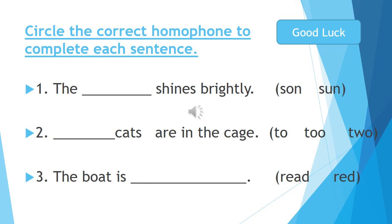Number three: the boat is blank. It's a color. The color of the boat is red. The boat is red. Good luck grade one, bye!